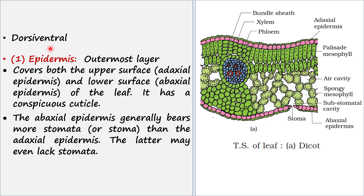The first layer is the epidermis layer, which is the outermost layer. This layer covers both the upper and lower surface of the leaf. The upper surface is called adaxial epidermis and the lower surface is called abaxial epidermis. Both adaxial and abaxial epidermis have a cuticle covering them.